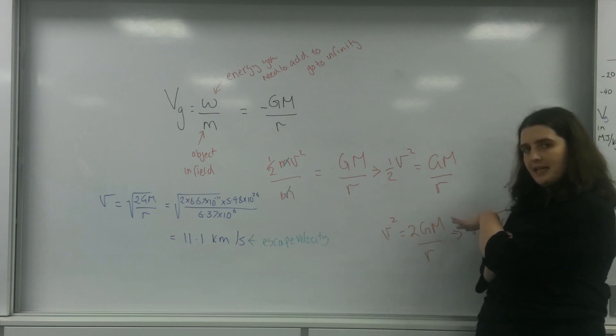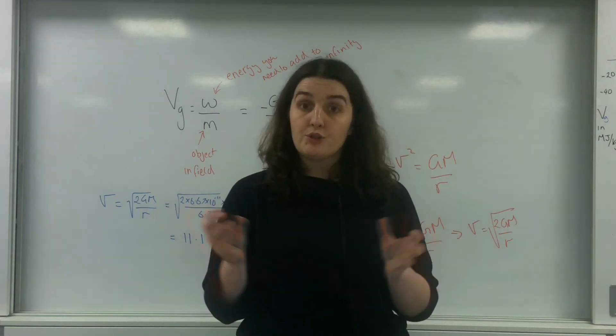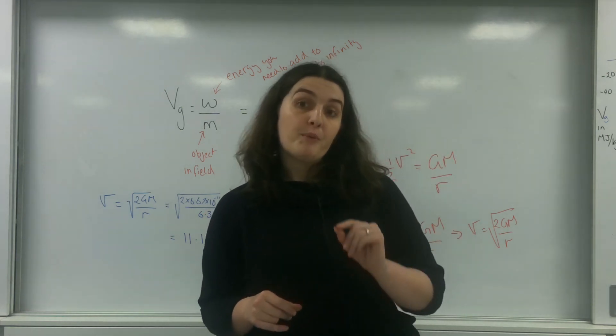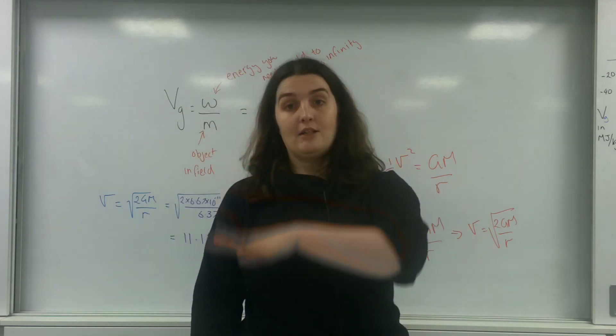So the Schwarzschild radius is basically taking the speed squared in r and flipping it over, and your velocity is the speed of light. And what that Schwarzschild radius is, is how small something can shrink before it becomes a black hole. And more of that will be done in astrophysics.